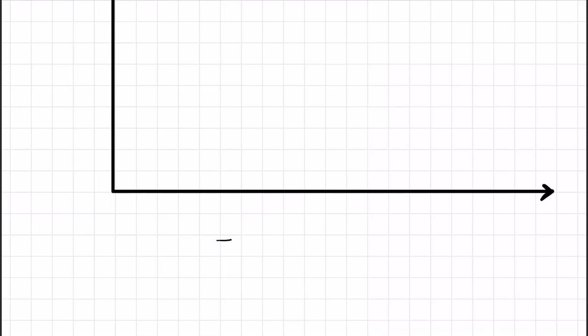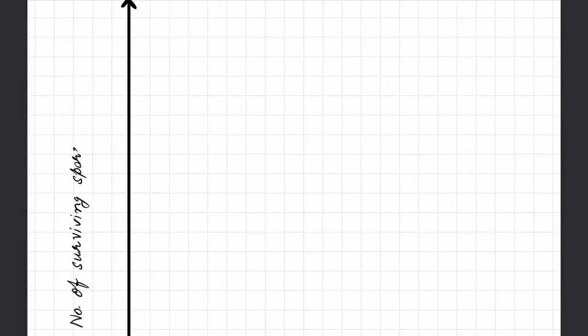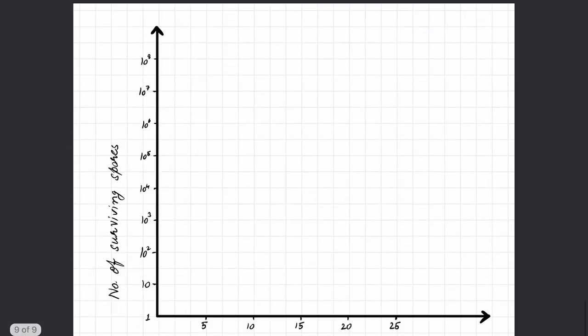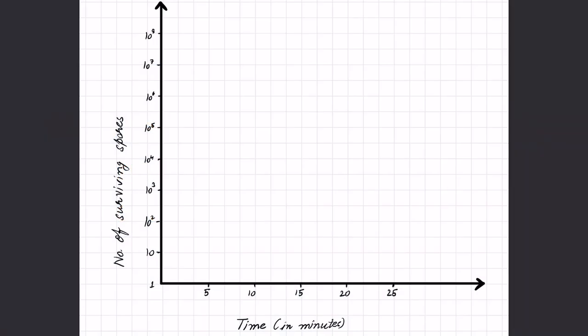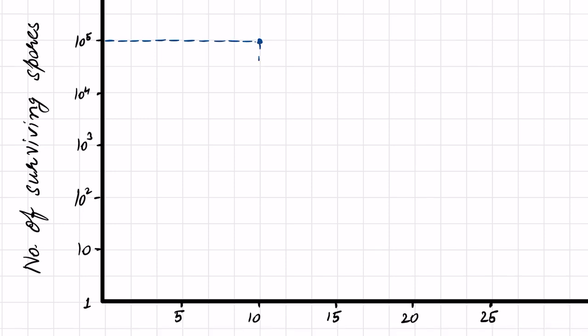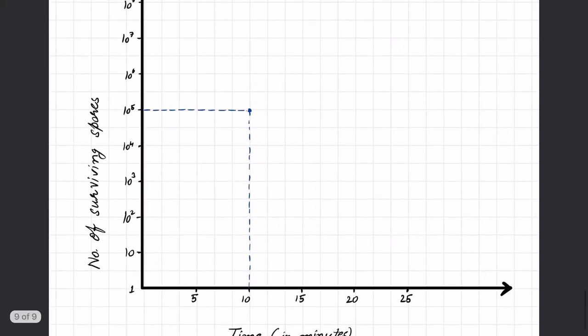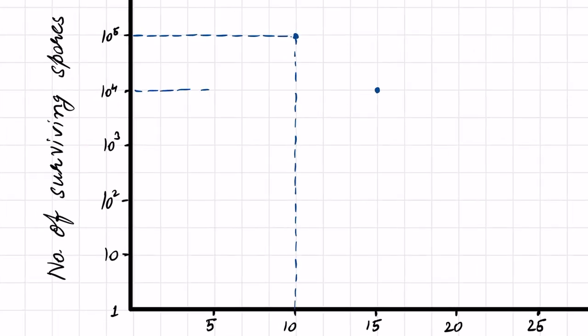There is a correlation between the population of microorganisms and the time of exposure to heat. As we increase the time of exposure, the number of microorganisms decreases. Let's put this on a graph — time on the x-axis and microbial population on the y-axis. This microbial population represents the number of surviving spores, and can also be denoted in terms of log. If we keep the temperature constant, the microbial population will decrease linearly with time. For example, after 10 minutes of exposure the population was 10 to the power 5, and after 15 minutes it came down to 10 to the power 4.